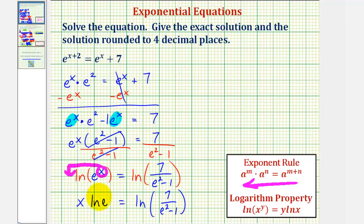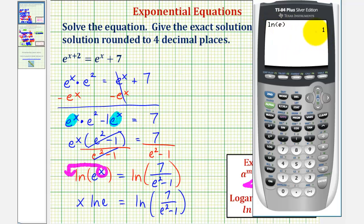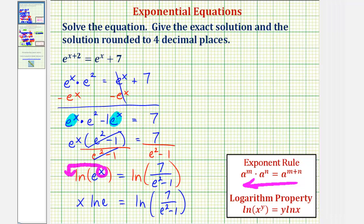Most textbooks won't show this step because natural log e is equal to 1, which we see here. The reason it equals 1 is because base e raised to the first power equals e. So because this equals 1, we have our exact solution.